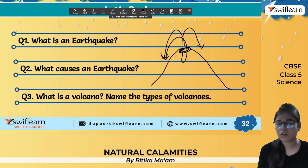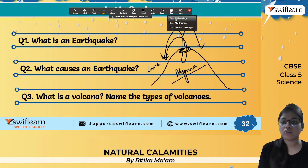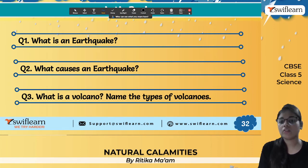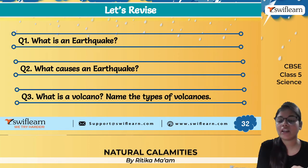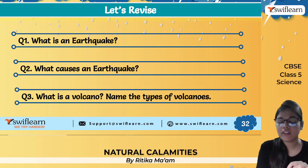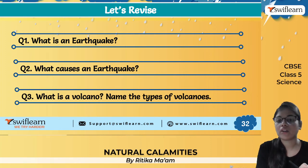Materials coming out of a volcano are known as lava, and inside the earth they are known as magma. There are basically three types of volcanoes: active, dormant, and extinct. Active volcanoes can erupt at any time — in India, Barren Island in Andaman is the only active volcano. Dormant volcanoes are sleeping volcanoes but can erupt at any time. Extinct volcanoes have not erupted over a very long time and have been declared extinct.